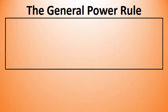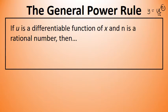The general power rule is a case of the chain rule that can be used to differentiate a function that can be written in the form y equals u to the n, where u is any differentiable function and n is a rational number.